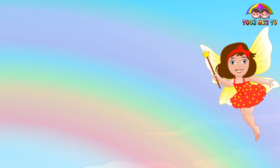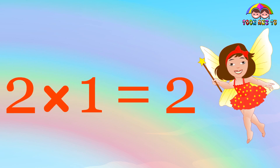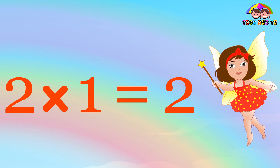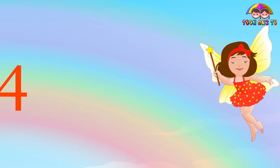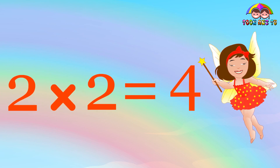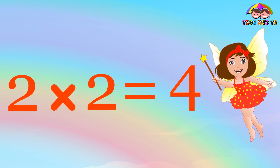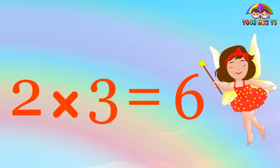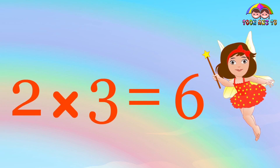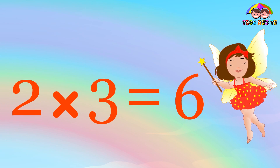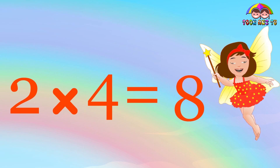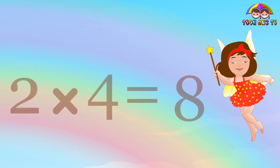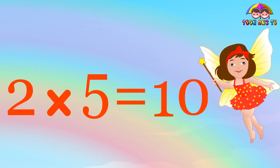Table of 2. 2 times 1 is 2. 2 times 2 is 4. 2 times 3 is 6. 2 times 4 is 8. 2 times 5 is 10.